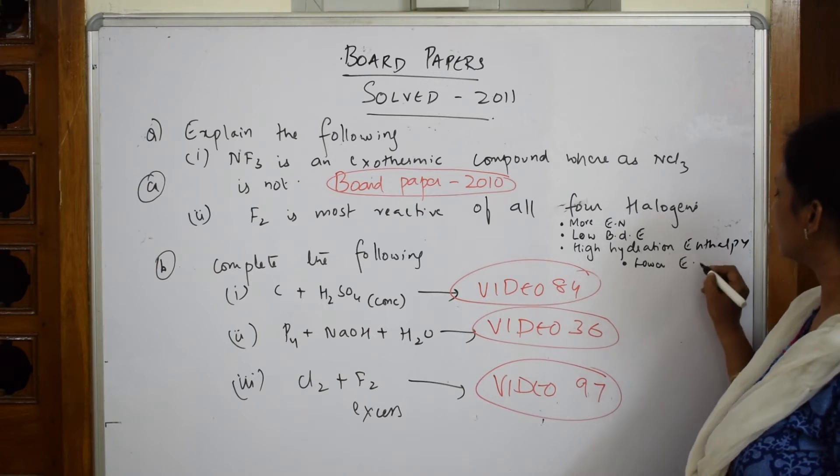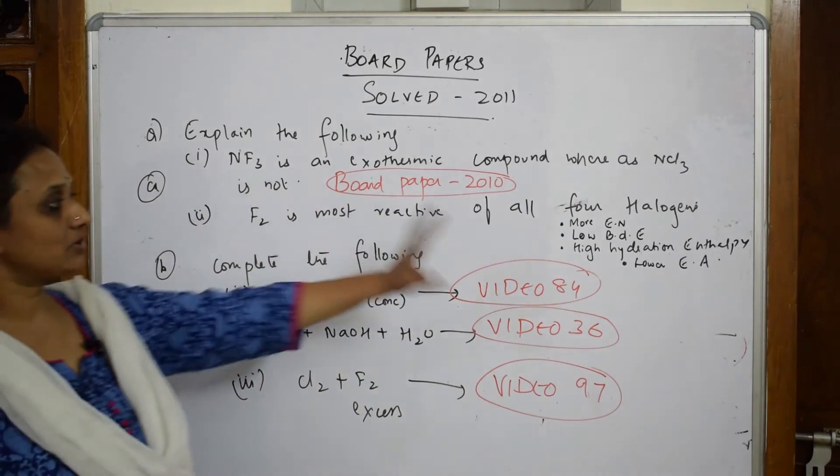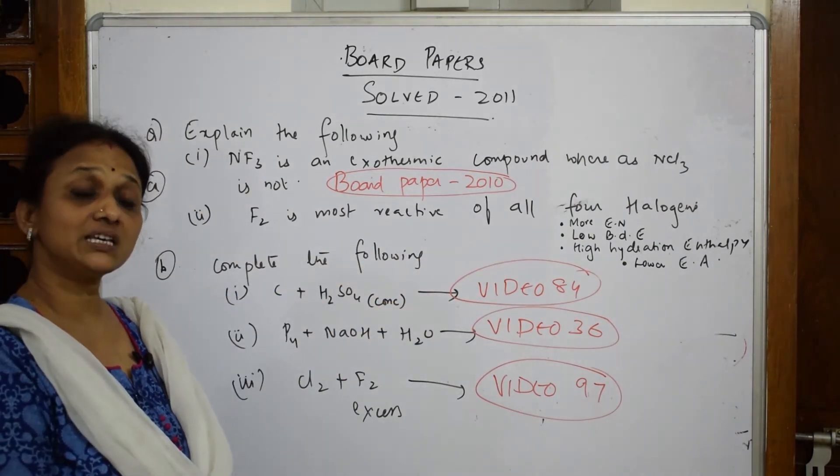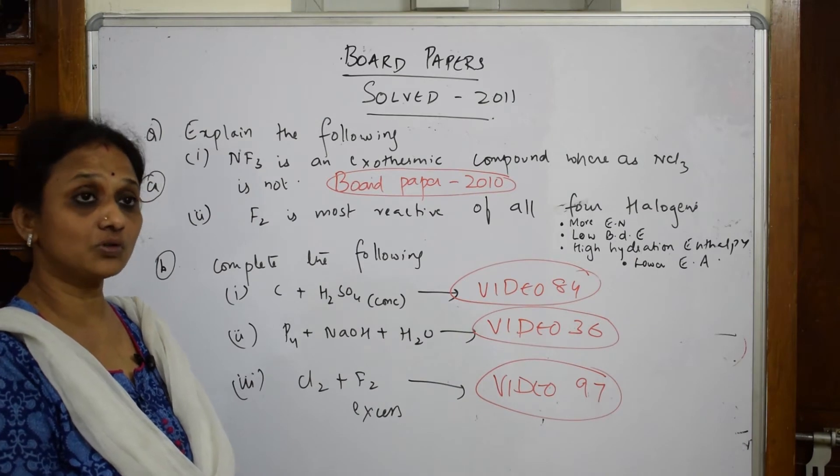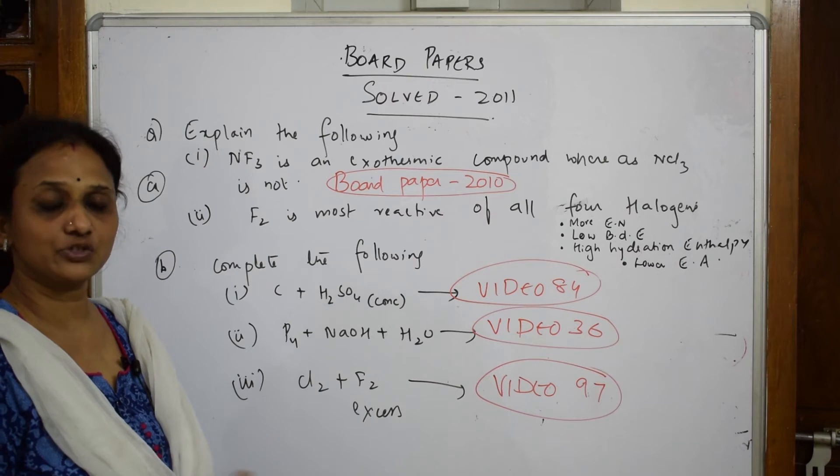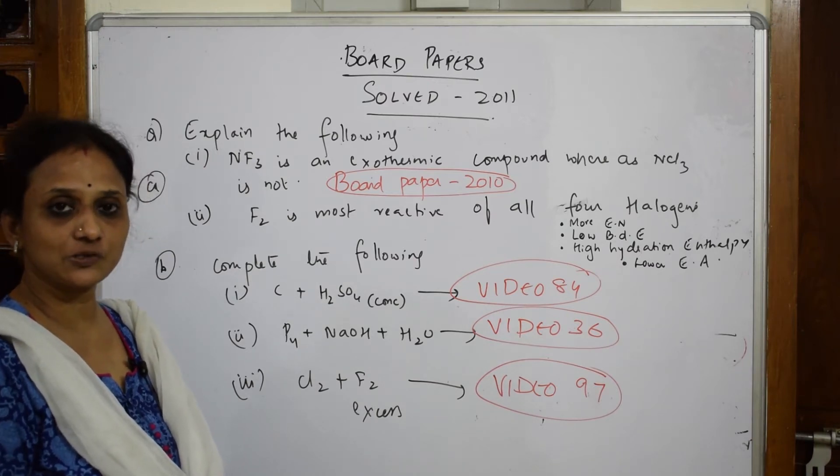You can also write in terms of lower electron affinity and attracting power. With these factors I'll explain, but I'm not explaining it here. Watch that video - you will understand under the heading 'why is fluorine more oxidizing than chlorine'. I've shown you Born-Haber cycle, Gibbs free energy, and electrode potentials. Watch that video.